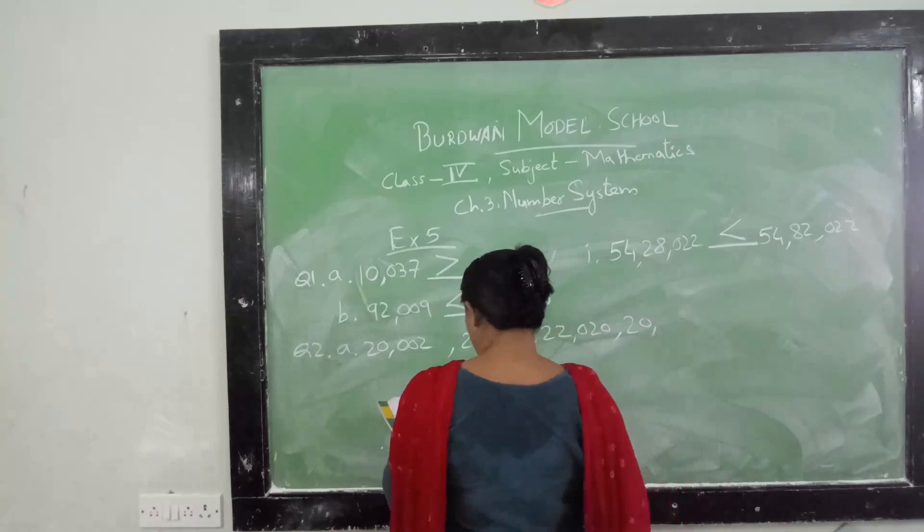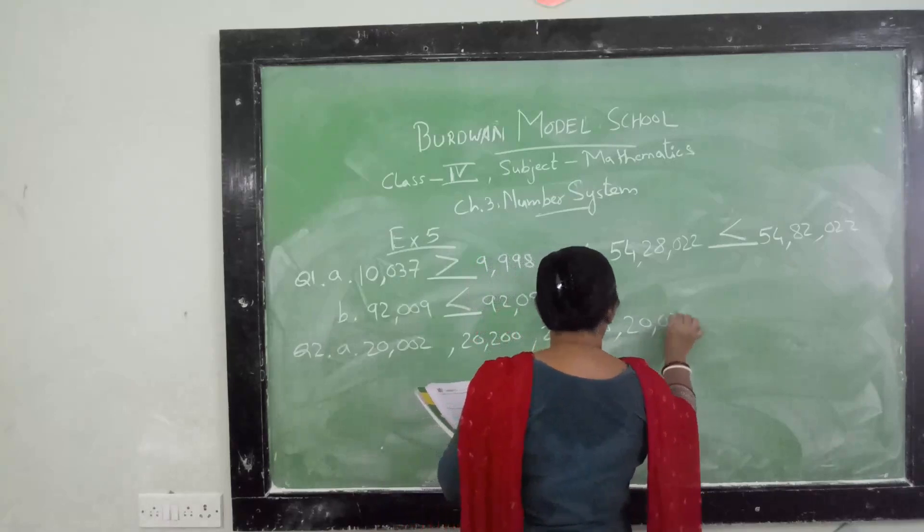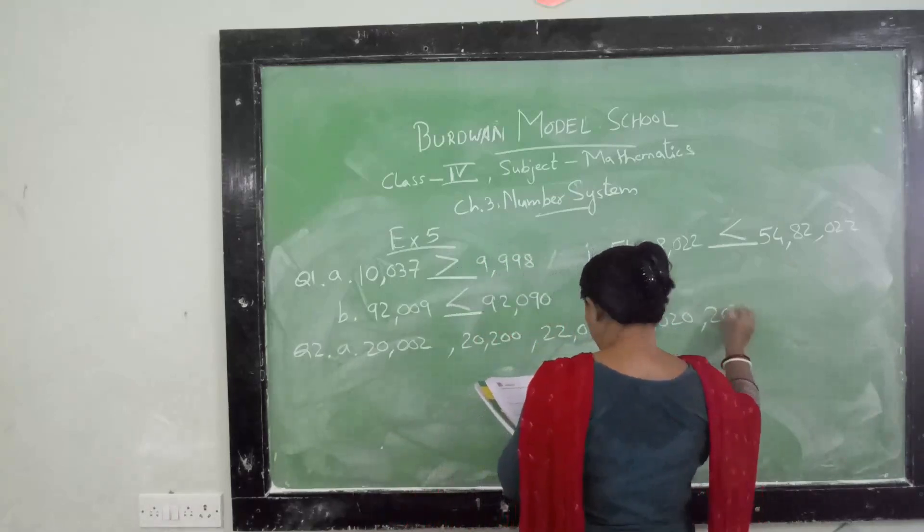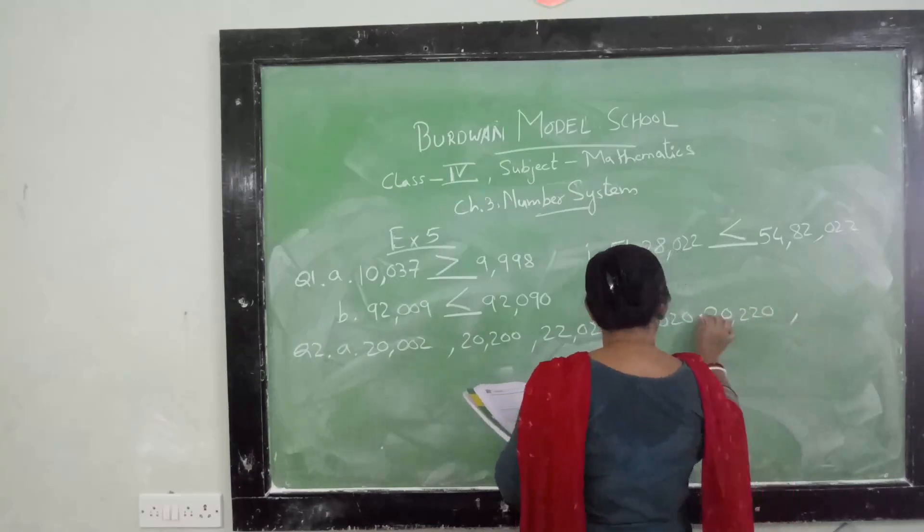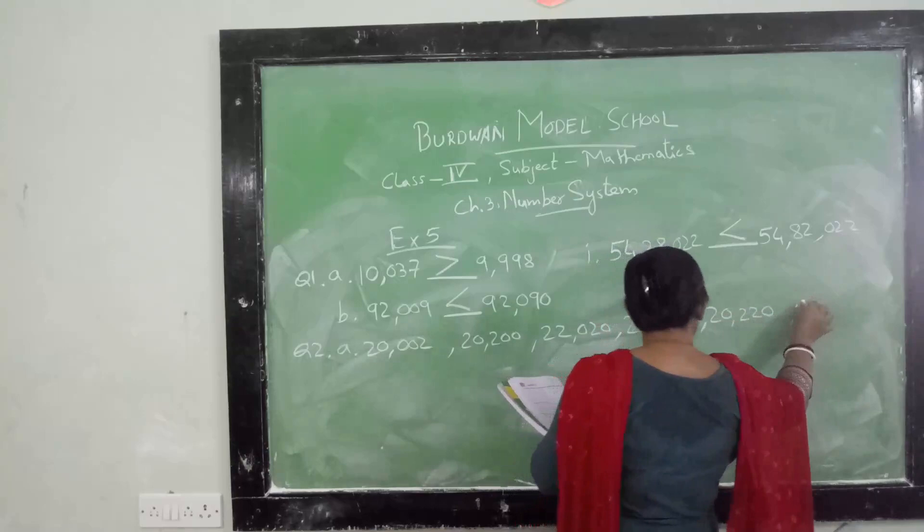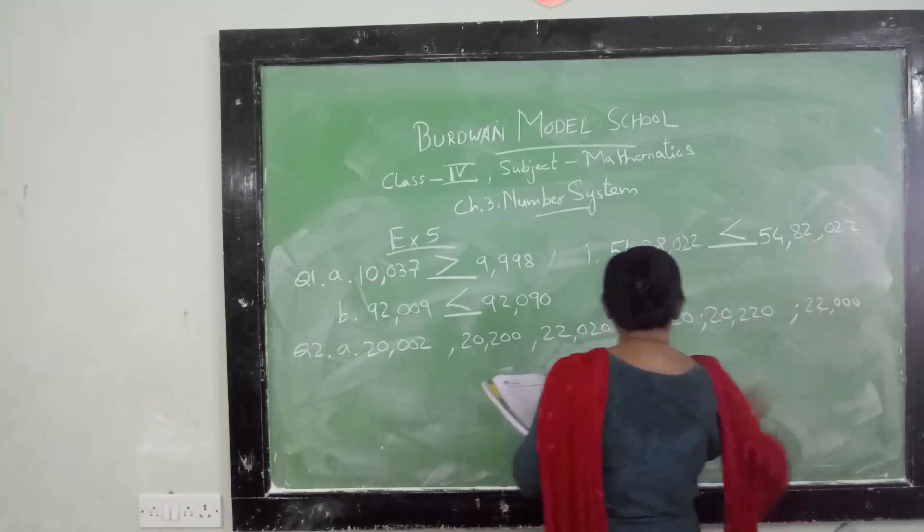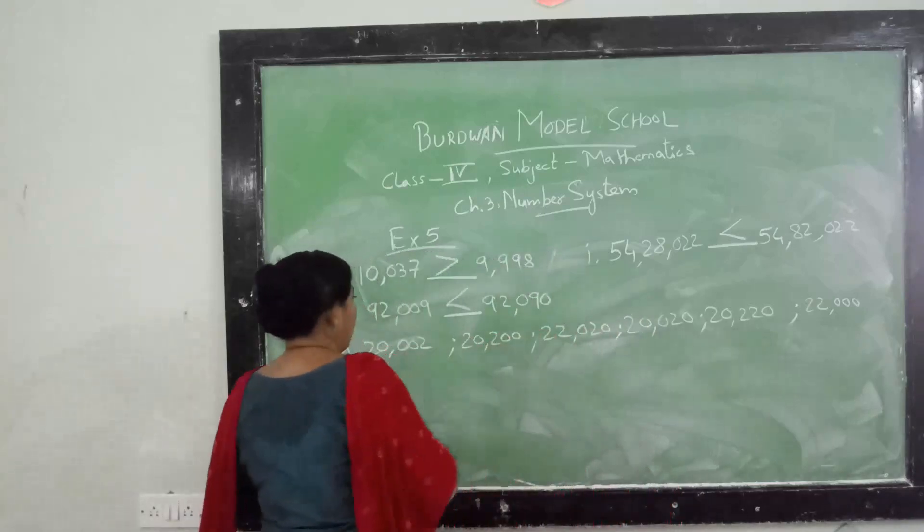Wait, I think I have mistaken. 200, then 20,020, next one is 20,220, and after that it is 22,000. To identify, I should give this type of commas, clear.